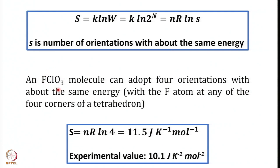Take an example of the FClO₃ molecule. This FClO₃ molecule can adopt 4 orientations with about the same energy, with the fluorine atom at any of the 4 corners of a tetrahedron. So 4 orientations means the value of S to use here is 4. Therefore S = NR log 4, and the molar residual entropy, putting N = 1, turns out to be 11.5 joules per Kelvin per mole, whereas the experimental value is 10.1 joules per Kelvin per mole. There is a very good degree of agreement between the calculated and experimental values. I hope it is clear how to theoretically calculate residual entropy using the formula NR log S, where S is the number of orientations with about the same energy.